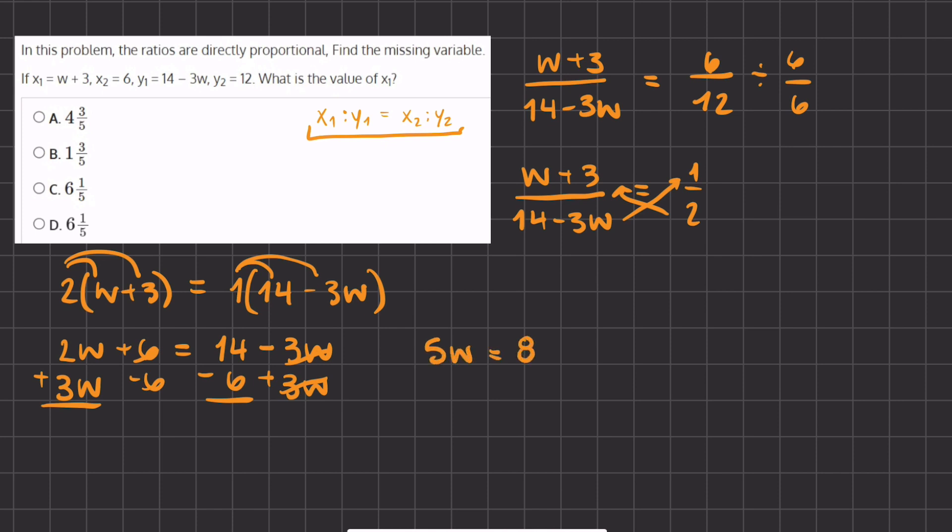Now if we want to isolate w, we'll divide 5 on both sides, and we will get 8 over 5. If we turn this into mixed terms, we'll ask ourselves how many times does 5 go into 8, and that is once, with 3 left over out of 5.